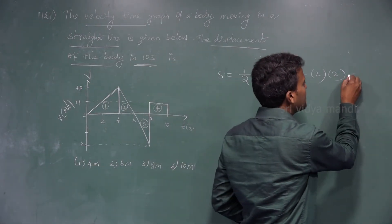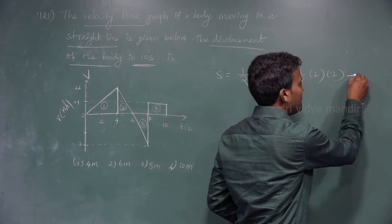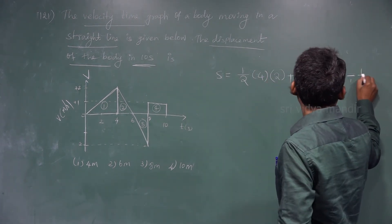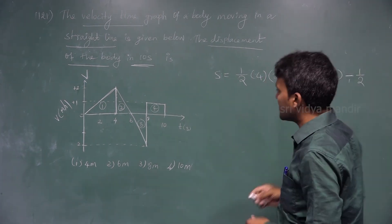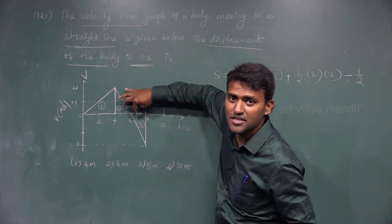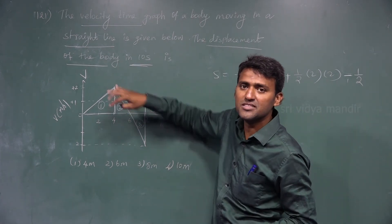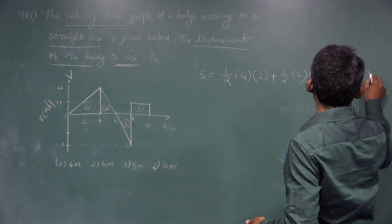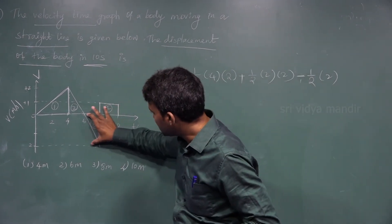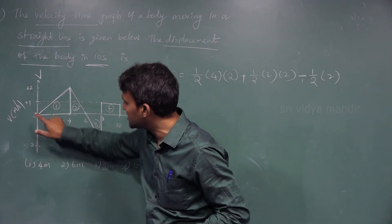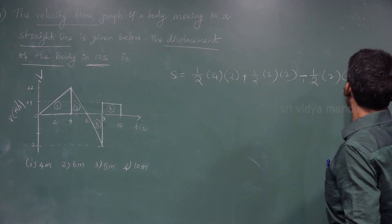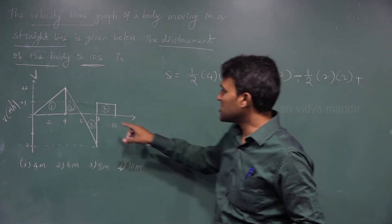Now the negative side — since displacement is a vector quantity, you have to write it as minus. For the third triangle: −(half) × base × height. The base is (8 − 6) = 2, and the height of the triangle is (2 − 0) = 2.